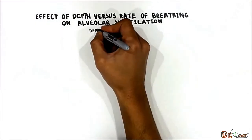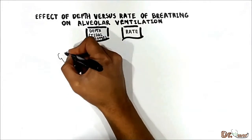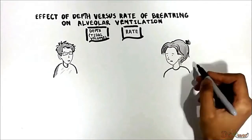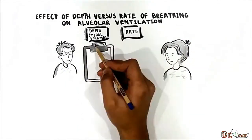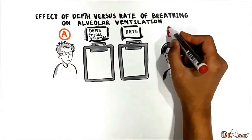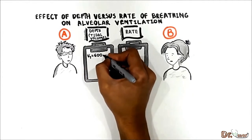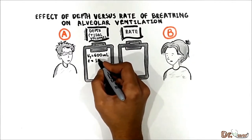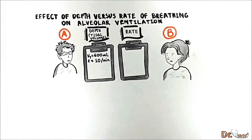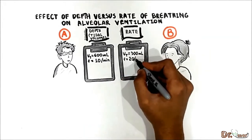Now let's see how depth — meaning tidal volume versus rate of breathing — affects alveolar ventilation. Suppose we have two patients: Patient A has a tidal volume of 600 mL and a respiratory rate of 10 per minute. Patient B has a tidal volume of 300 mL and a respiratory rate of 20 per minute.